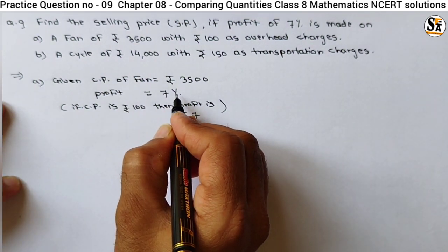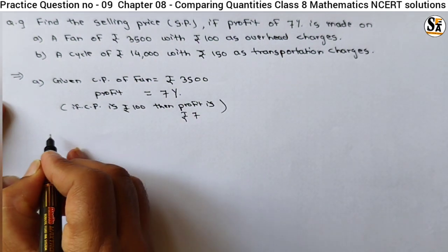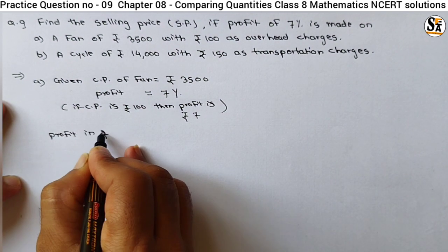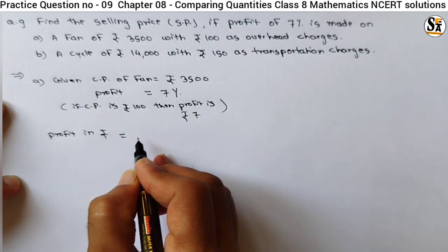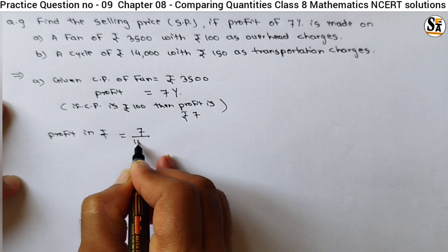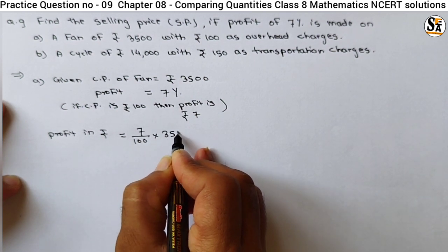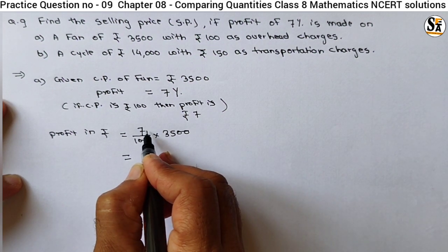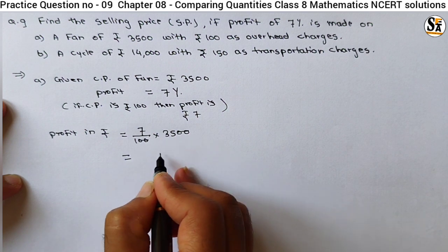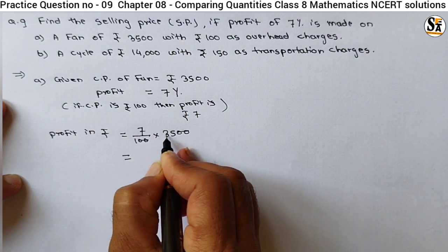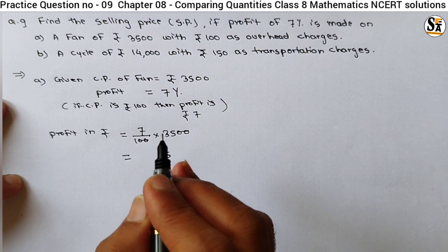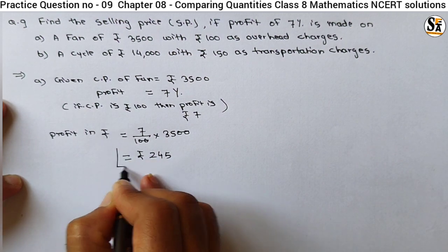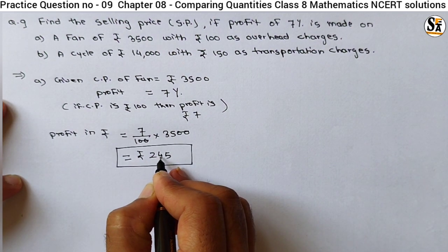So let's calculate profit in rupees. Profit in rupees is equal to 7 upon 100 into CP, which is 3500. The two zeros get cancelled, giving us 35 into 7. That is 245 — so we got profit in rupees, which is 245.